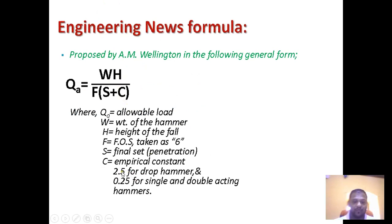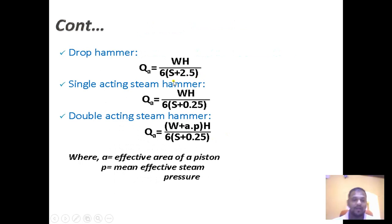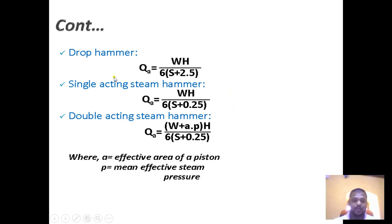For a single action steam hammer: Qa = (W × H) / (6 × (s + 0.25)). For a double action steam hammer: Qa = ((W + A × p) × H) / (6 × (s + 0.25)), where A is the actual area of piston and p is the mean effective steam pressure. These formulas change according to the type of hammer used.